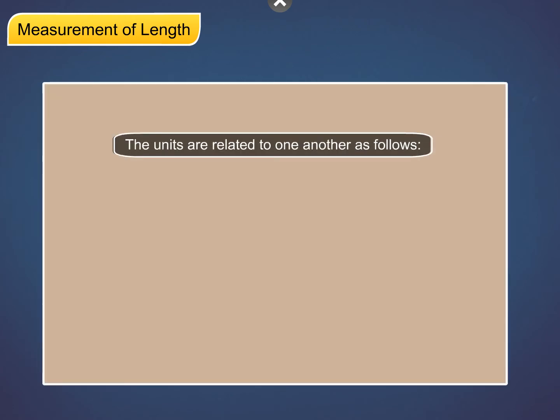The units are related to one another as follows: One centimetre (cm) is equal to 10 millimetres (mm).